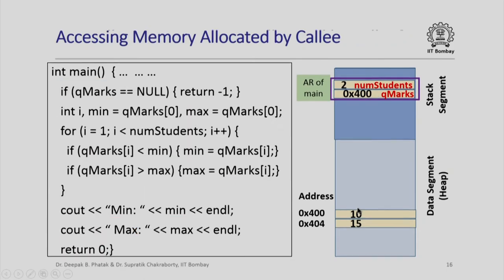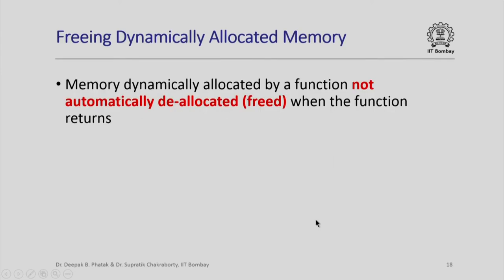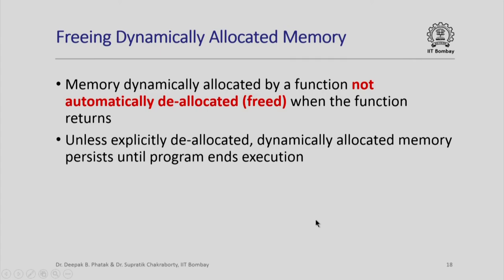The main function might do a whole bunch of things with this memory — sanity checks and calculating the minimum and maximum of the marks. But the question is: since `read_quiz_marks` returned without freeing the two dynamically allocated memory locations, when is this memory going to be freed? In C++, memory that is dynamically allocated by any function is not going to be automatically deallocated when the function returns. Unless you explicitly deallocate dynamically allocated memory, it will hang around in the data segment until the program ends, which can be very wasteful of memory.